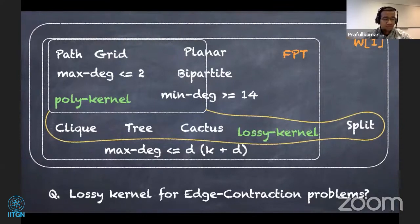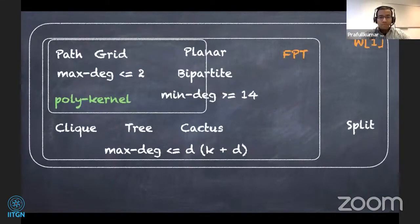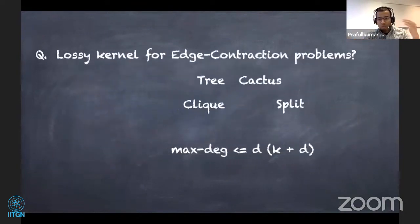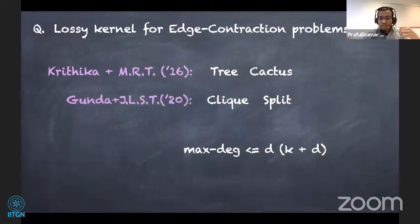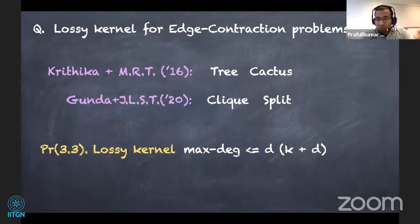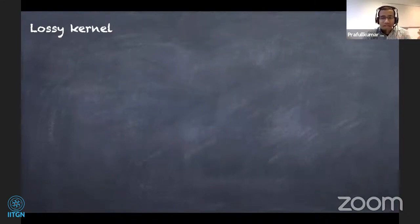With a small loss in accuracy we can bound our instance by a polynomial in k. For split contraction, for alpha greater than two it does admit a lossy kernel. In 2016 we proved that tree contraction and cactus contraction admit a lossy kernel of polynomial size; this year we proved that clique contraction and split contraction admit a lossy kernel of polynomial size. An open problem remains: does maximum-degree-at-most-d contraction, parameterized by k + d, admit a lossy kernel?